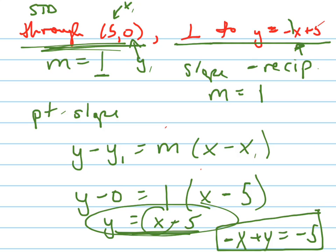And actually, some books teach you to make your leading coefficient positive. So to get rid of this negative x here, I'm going to multiply everything by negative 1, meaning switch all the signs. So there's your answer. Your answer is x minus y equals 5. That's standard form for the textbook that you're using in this class.